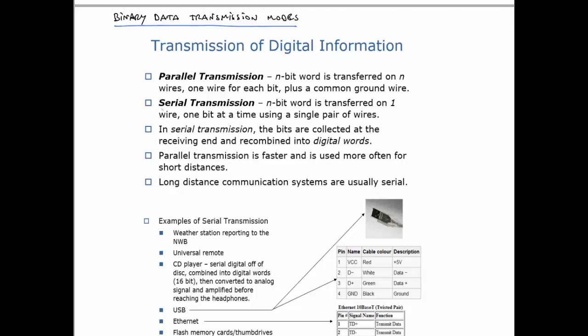Let's recap on serial again just by reading this and then we'll talk about parallel. So serial transmission is that an n-bit word, an 8-bit word, is transferred one bit at a time, typically using just a single pair of wires. And in contrast, parallel transmission says that an n-bit, say 8-bit word, is transferred on 8 wires, one wire for each bit plus a common ground wire.